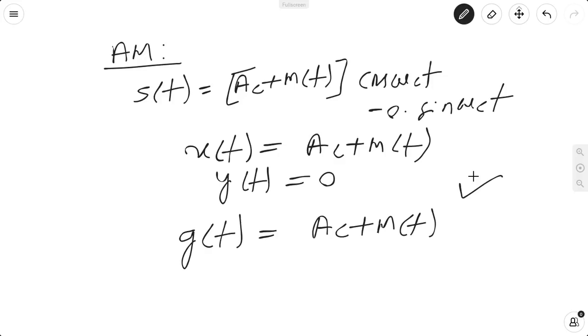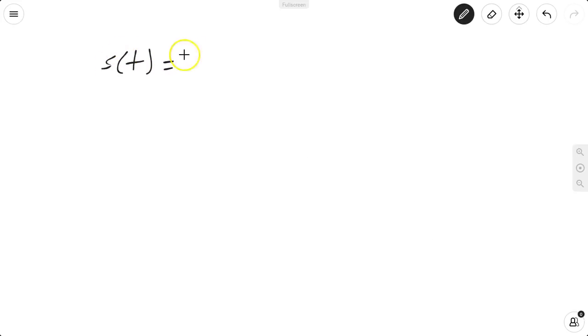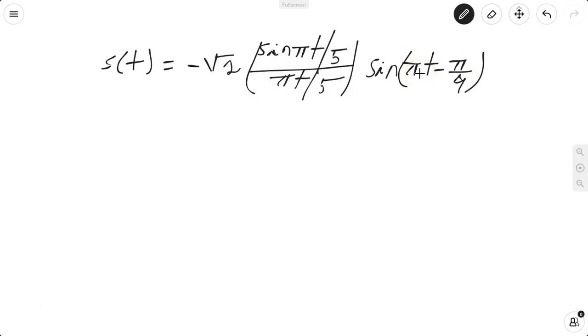Let us go by another example which appeared in GATE 2015. A bandpass signal was given: s(t) = -√2 [sin(πt/5)/(πt/5)] sin(πt - 5π/4). Assume this signal as p(t).